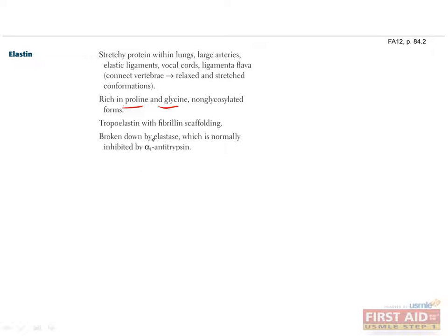So how is elastin made? First, tropoelastin is secreted, and then it's cross-linked to other tropoelastin molecules along with the scaffolding of fibrillin. It's this cross-linking of tropoelastin molecules that gives elastin its elastic properties.